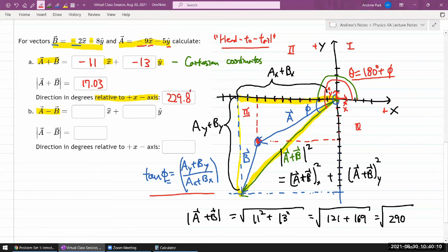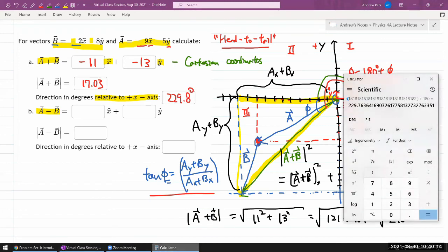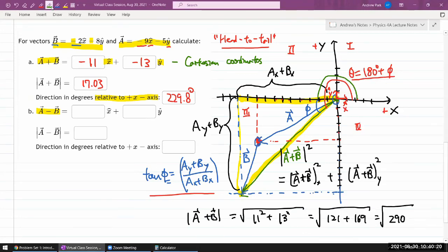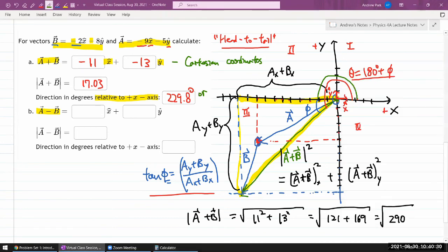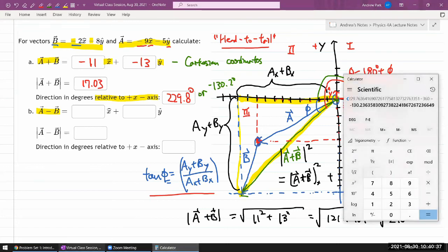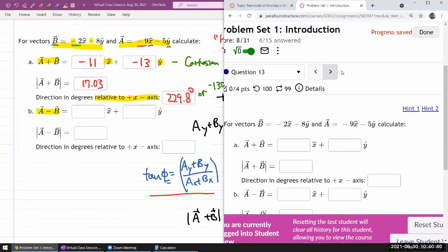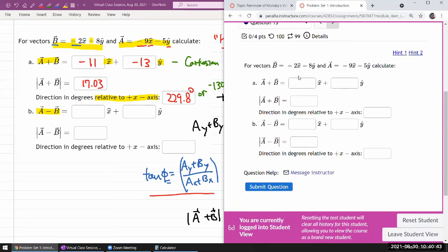229.8. Or if you want it to be difficult, you could subtract 360 from it and that should also be correct. I don't know if the system will treat it as correct, so let me just have it ready and let me plug it in and see. Minus 130.2 degrees. I'm just curious if the system will treat it as correct. I think it should, but you know, if it doesn't then it's not necessarily an error in the question, because again I'm being difficult. 17.03, let's see. Minus 130.2, if it'll say that's correct.